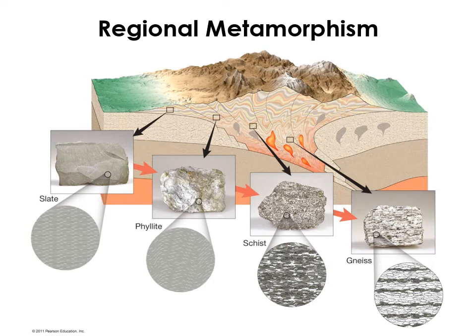There are two main ways that we get metamorphic rocks: regional metamorphism and contact metamorphism. Regional metamorphism happens over large regions and deforms a lot of rocks. Most of the metamorphic rocks we see are formed by regional metamorphism.